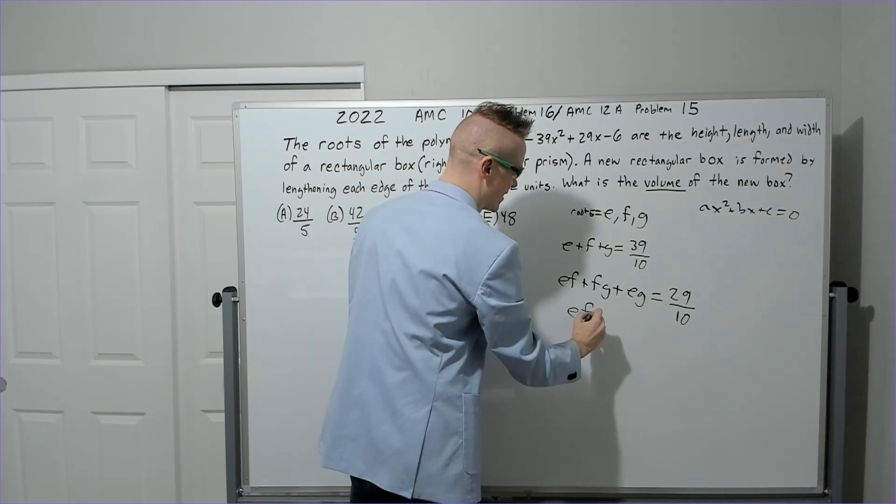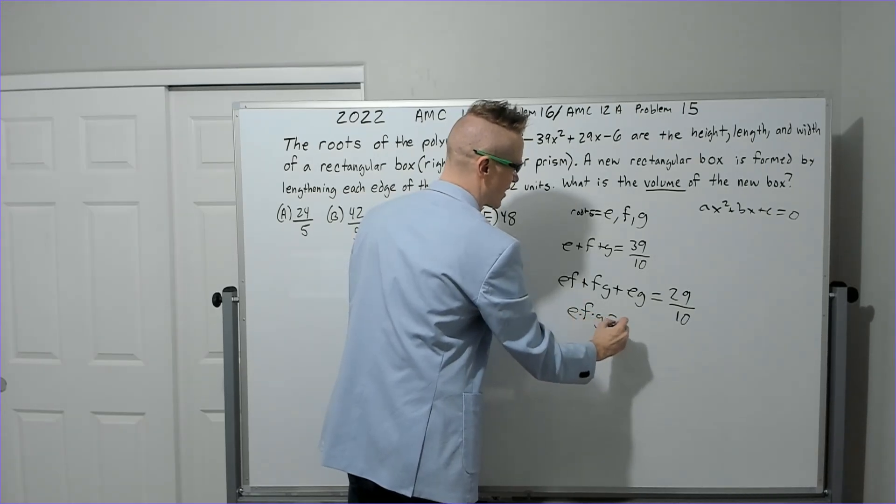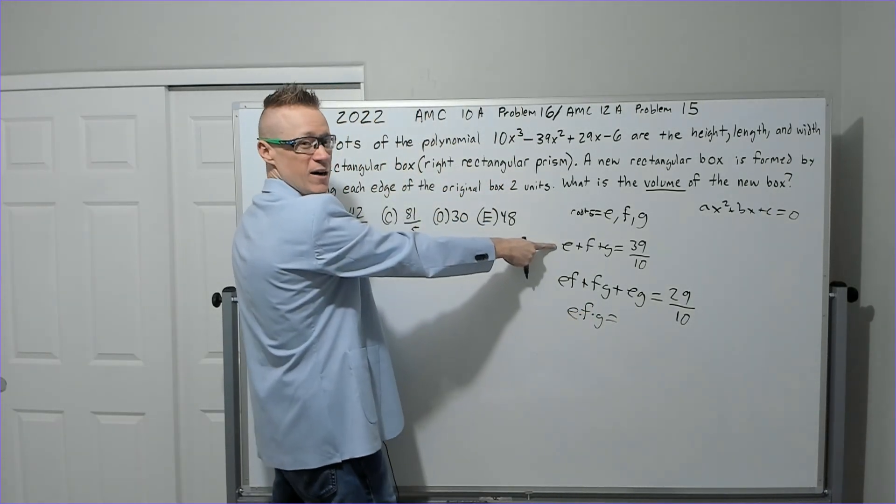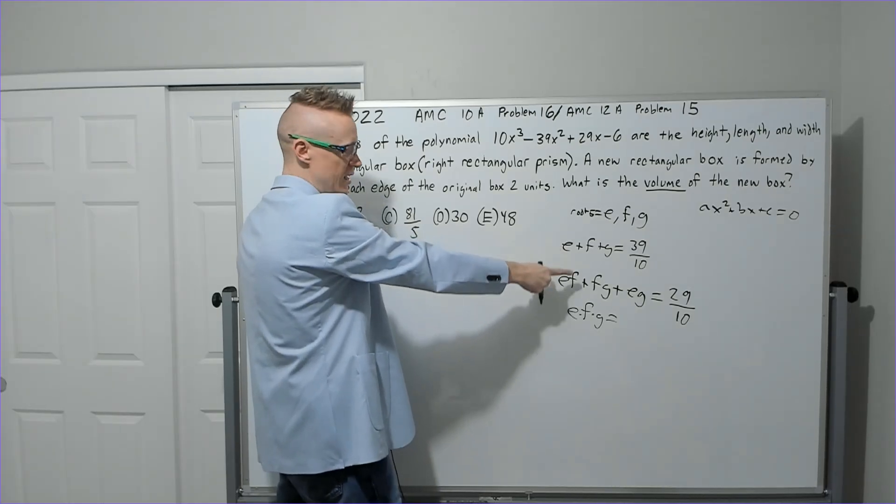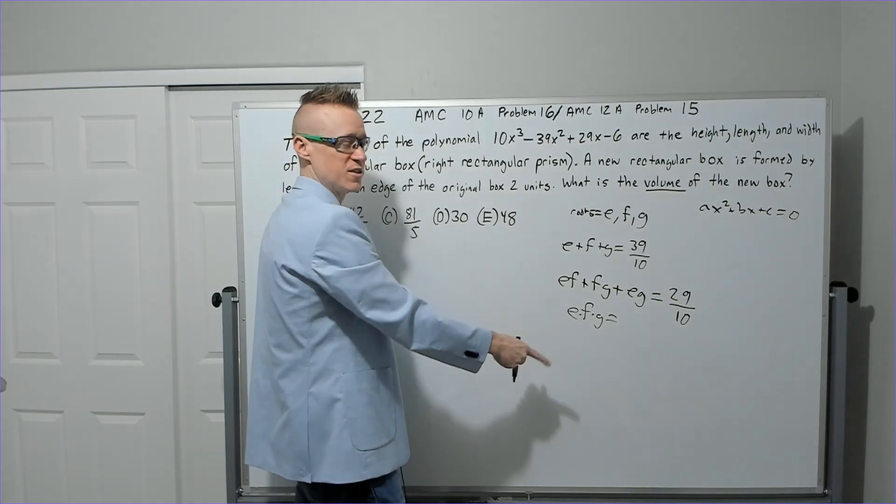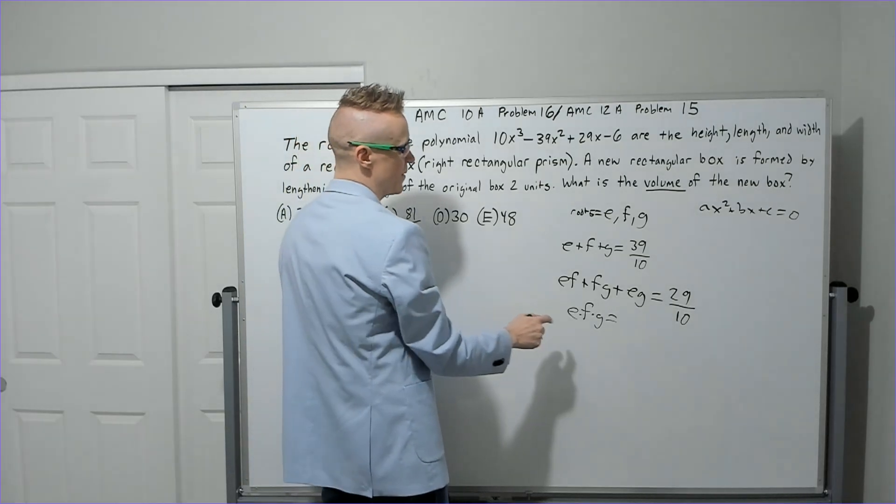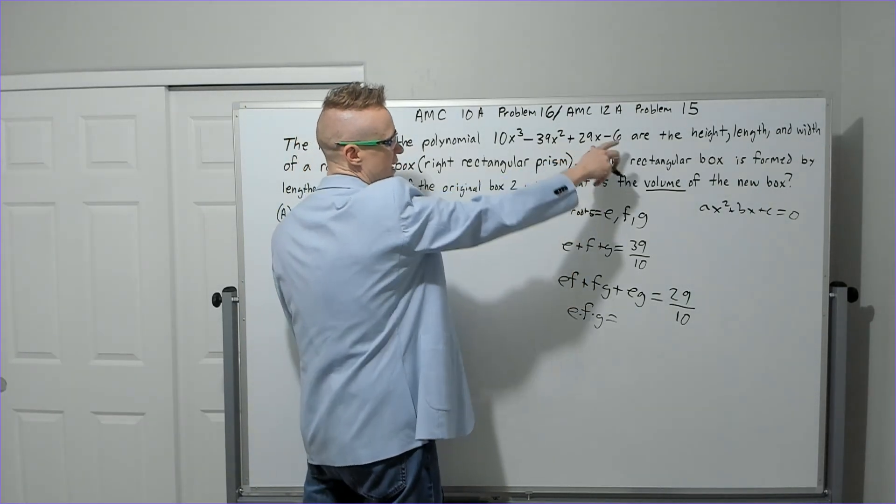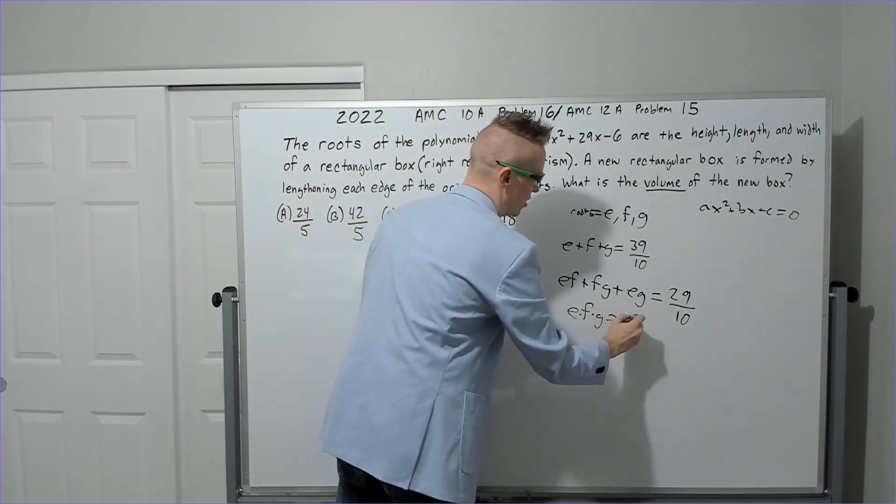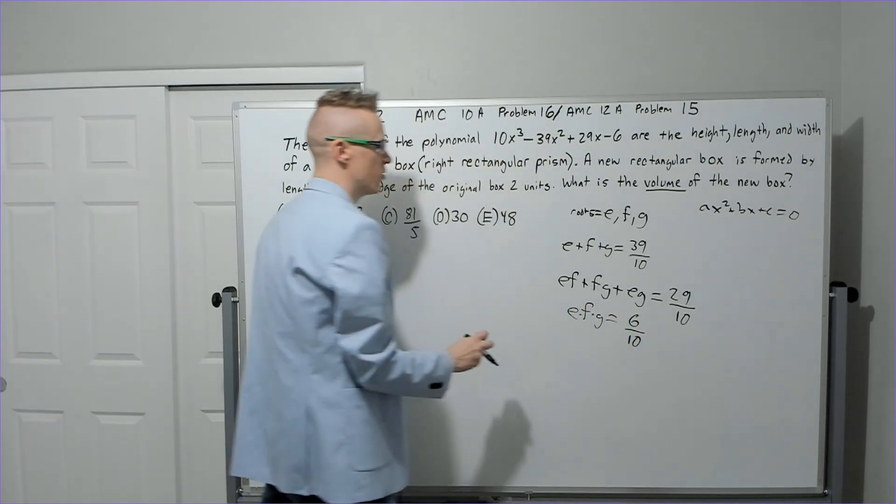And then all three of them multiplied together, e times f times g. Notice what we're doing: we're pairing them and putting them in groups of one, groups of two, and now groups of three. And there's only one group of three when there's three things. So e × f × g is going to equal 6 over 10.